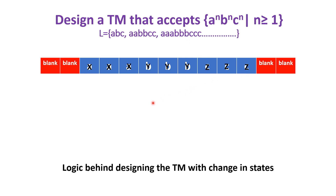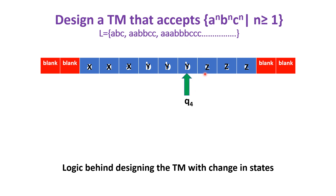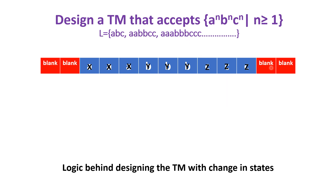At Q0, when we see Y, change the state to Q4 and go towards the right. In the right we must have only Y's, and after Y's we must have only Z's. At Q4, keep the Z as it is and move towards the right until we come across a blank. If we come across a blank, it means the tape has the A raised to N, B raised to N, C raised to N strings. At that time, change the state from Q4 to the final state QZ — you can move either left or right.